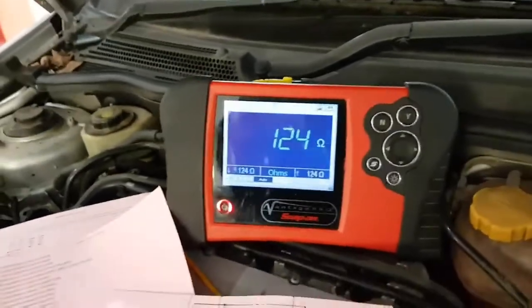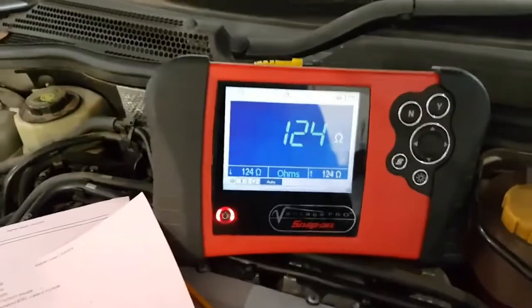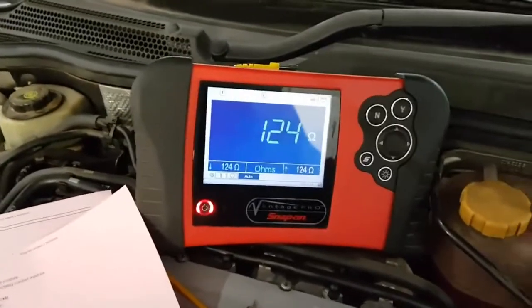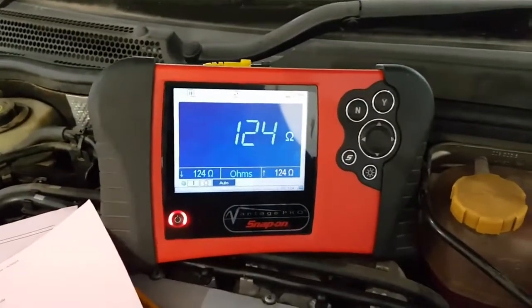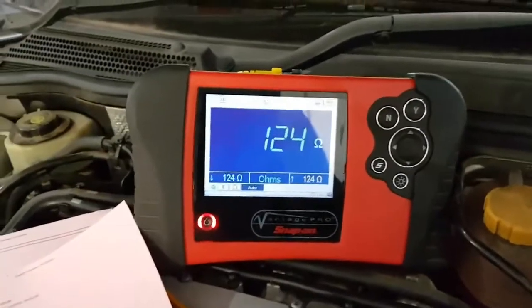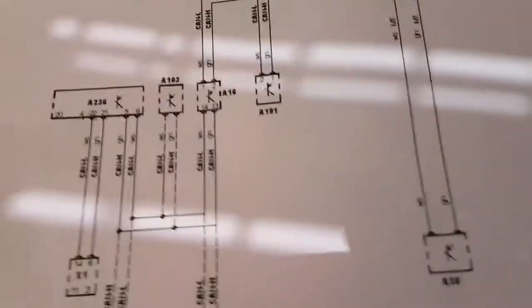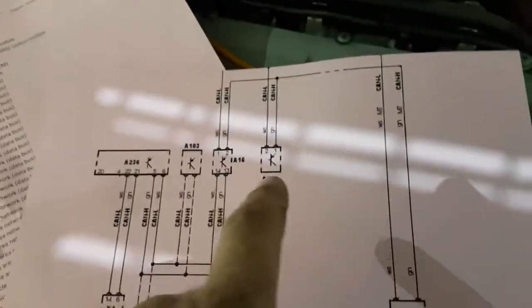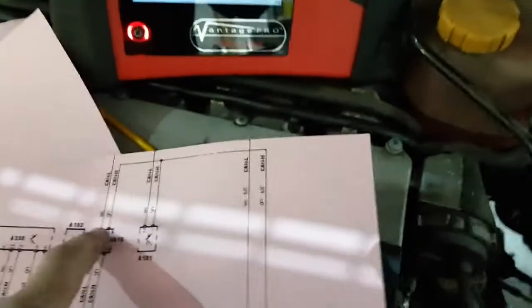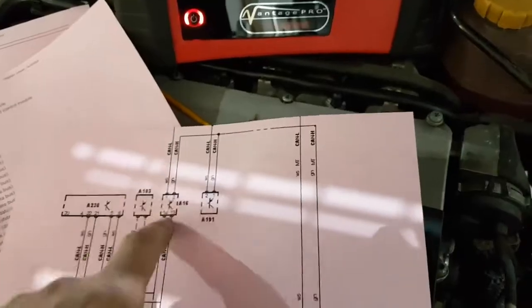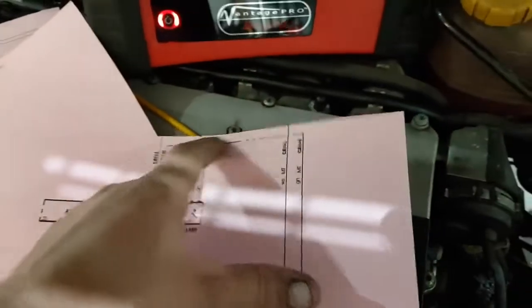Straight away we go to 124 ohms. So we're connected to the DLC. And we've now got one termination resistor in play. So I now know, by just doing that one unplug, I now know that my fault, my short, is somewhere from the ABS to here.